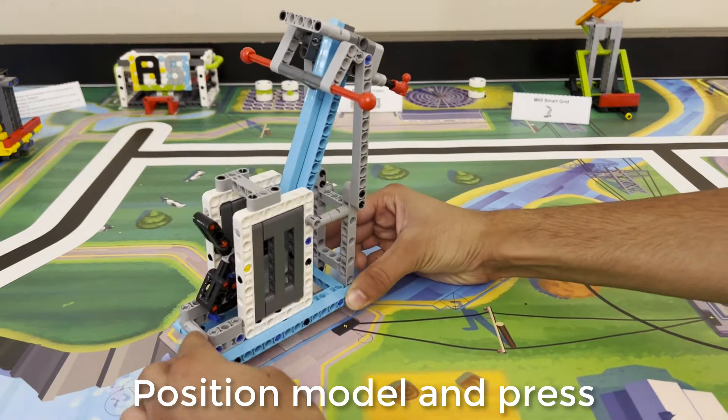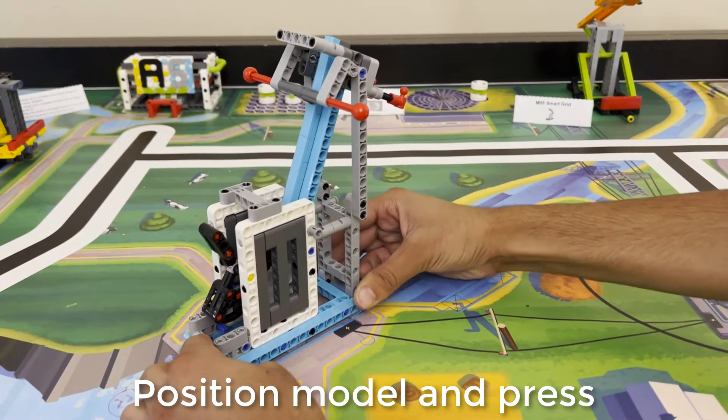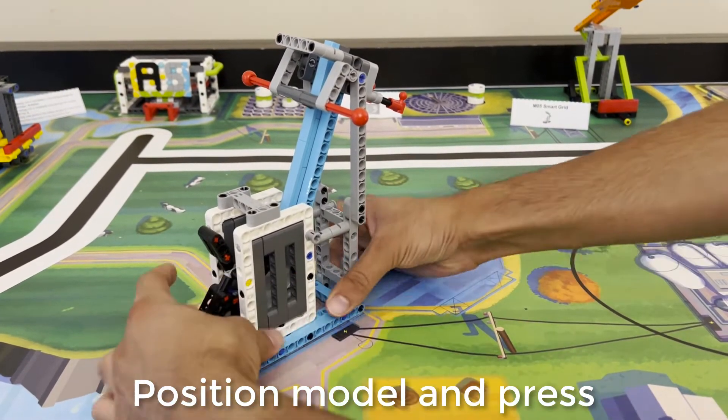Place the model back, carefully aligning it to the markings on the mat. Press down as low as possible on the model.